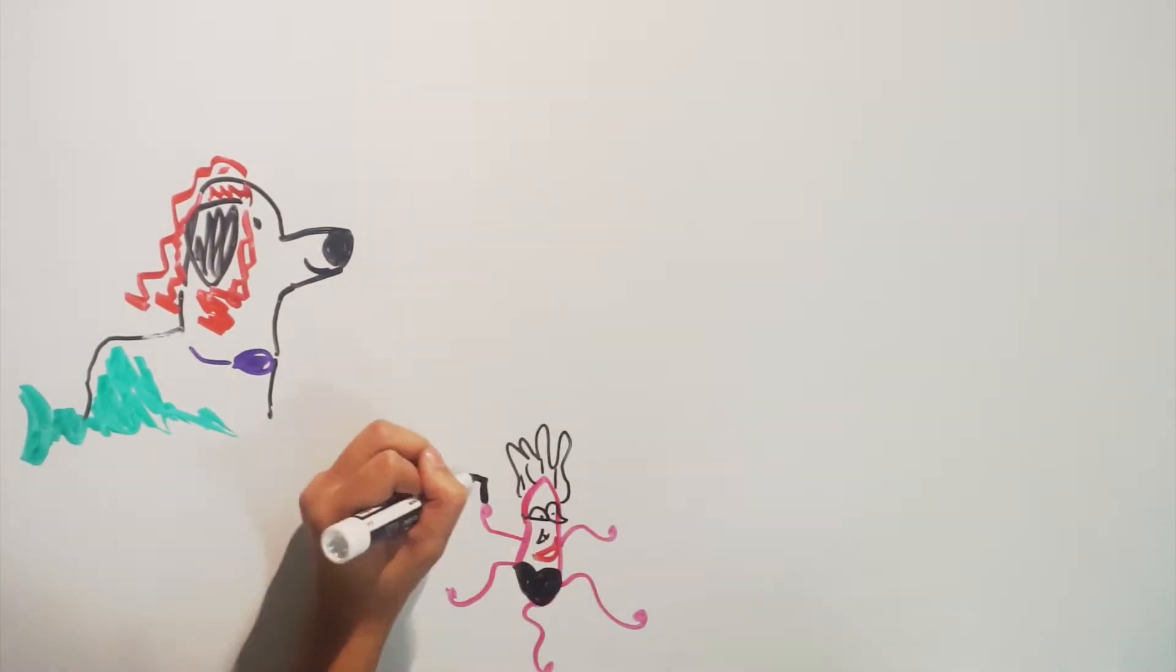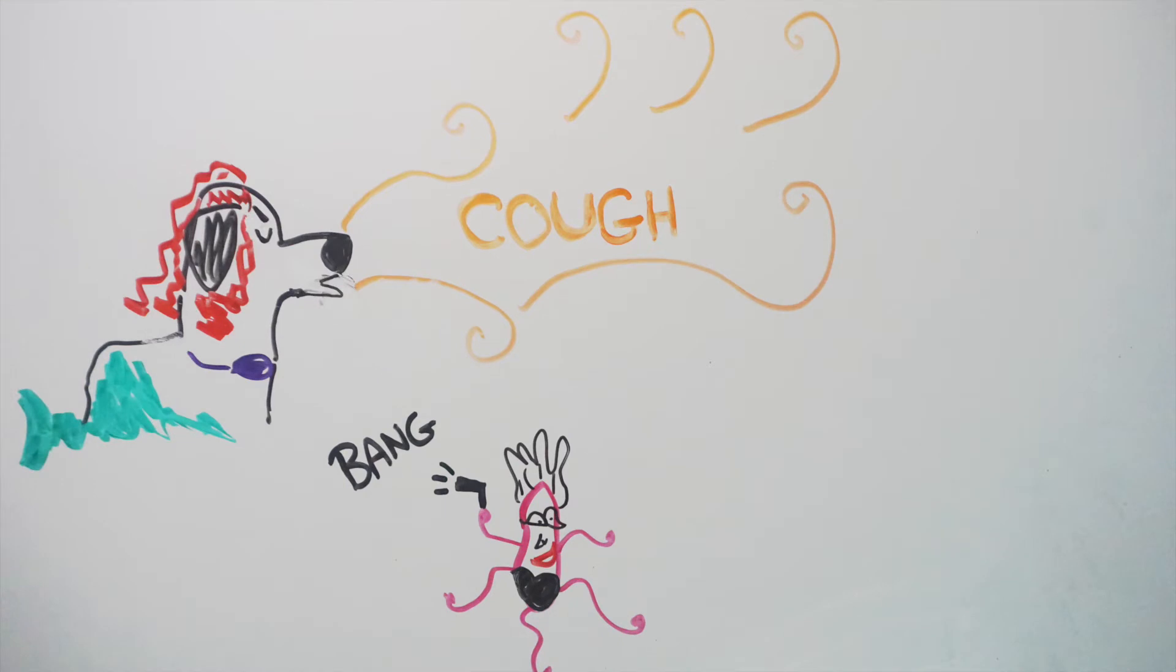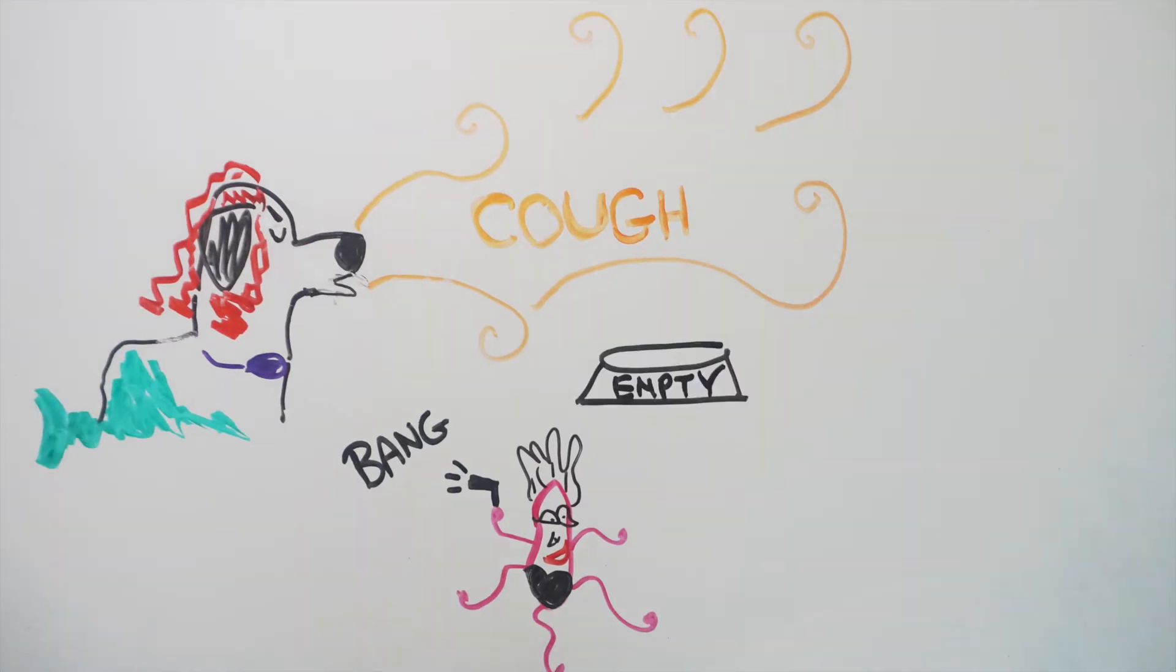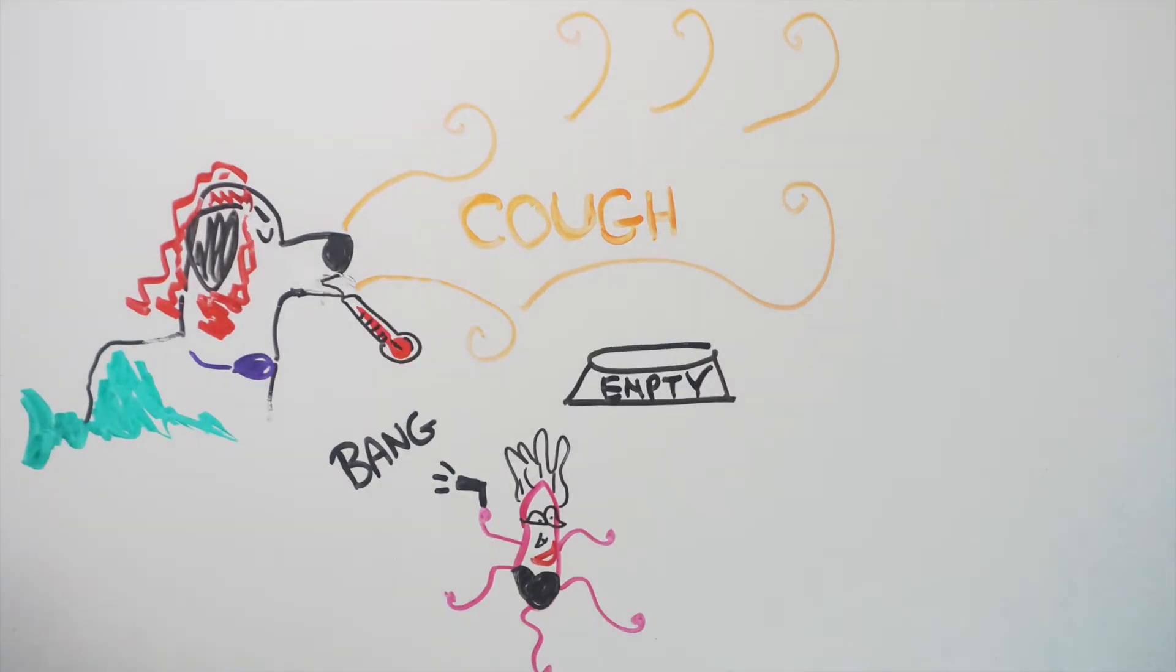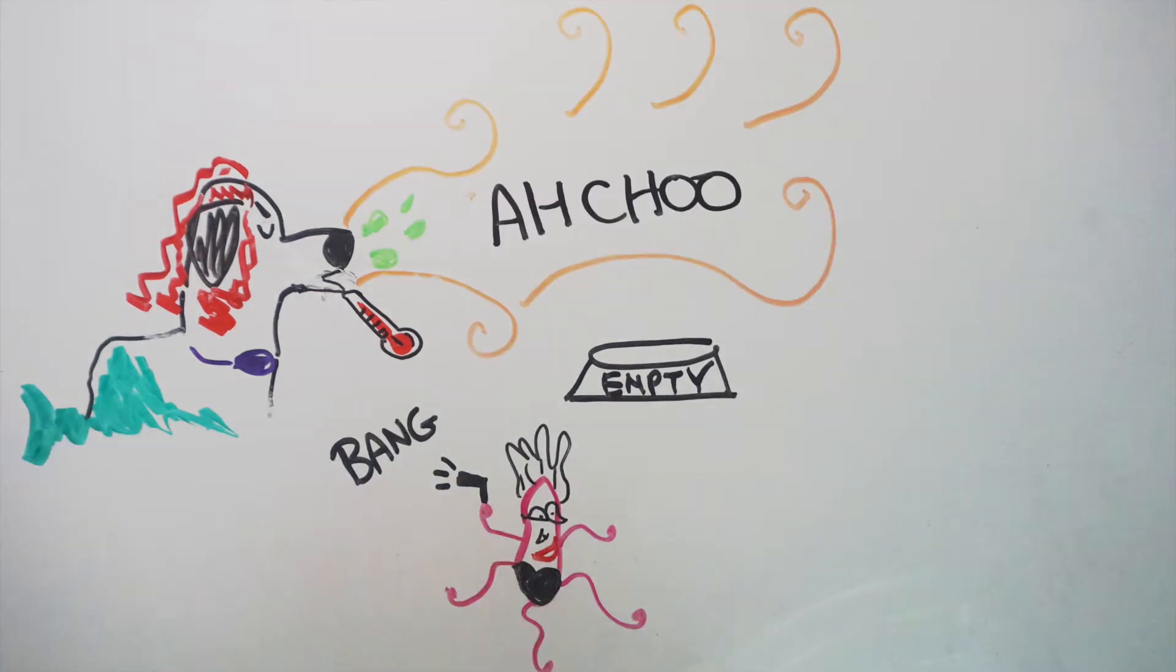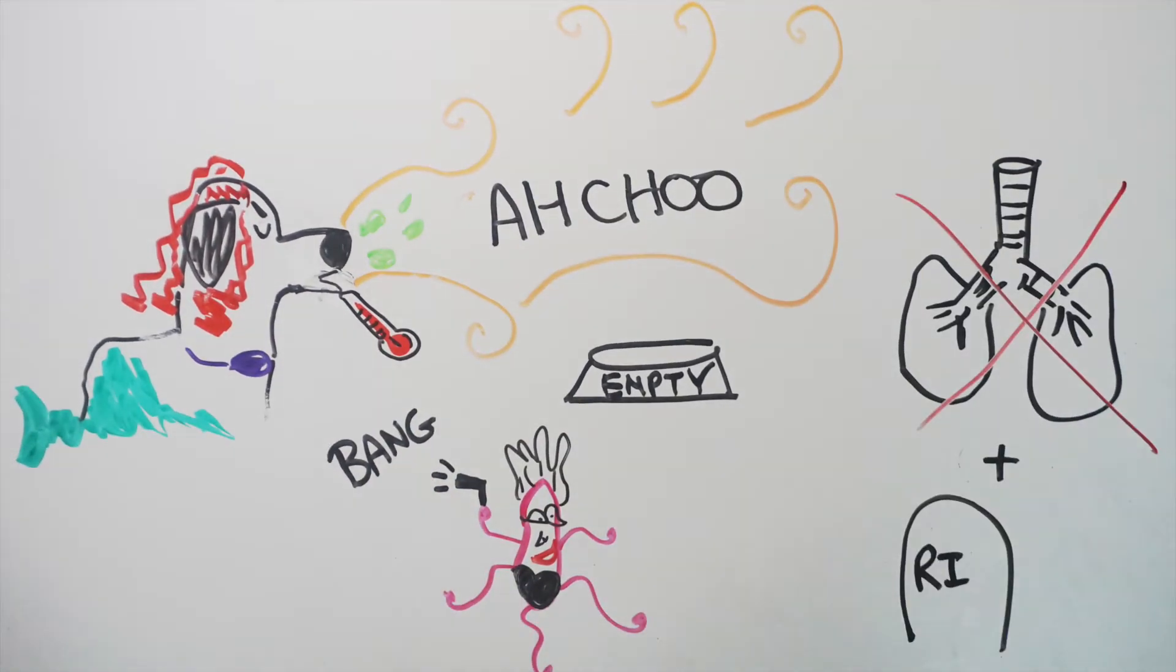Once she has infected her host, she causes harsh, dry coughing followed by retching or gagging. She has the power to cause loss of appetite, pyrexia, nasal discharge, and sneezing. She can even cause bronchopneumonia and death in her weakest victims.